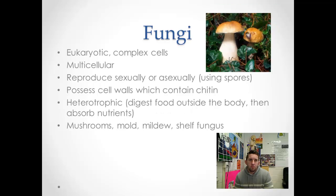Fungi are eukaryotic with complex cells, continuing through the domain eukarya. Unlike plants, which have cellulose in their cell walls, fungi have chitin in their cell walls. They're multicellular and can reproduce sexually or asexually using spores. They're heterotrophic — specifically saprotrophic, meaning they release enzymes that digest food outside their body and then absorb the nutrients. They grow on dead and decaying matter, typically where it's damp. Examples include mushrooms, mold, mildew, and shelf fungus.